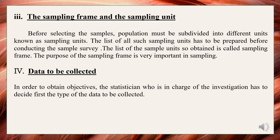The sampling frame and sampling unit: Before selecting the samples, the population must be subdivided into different units, known as sampling units. The list of all such sampling units has to be prepared before conducting the sample survey. This list is called the sampling frame. The purpose of the sampling frame is very important in sampling. Once the sampling units are defined, one must see whether the sampling frame, which is a list of all the units in the population, is available. The construction of the frame is often one of the major practical problems, since it determines the structure of the sample survey. The list of units has to be carefully scrutinized to ensure it is free from duplicity or incompleteness and is up to date.